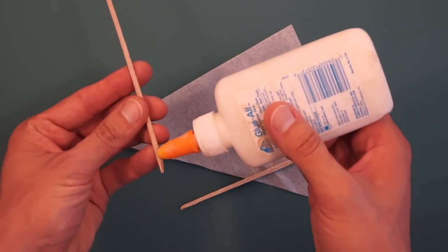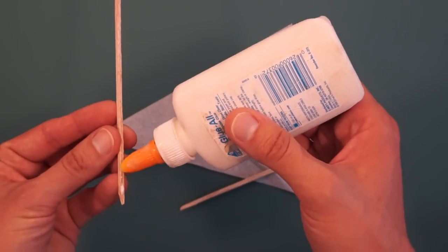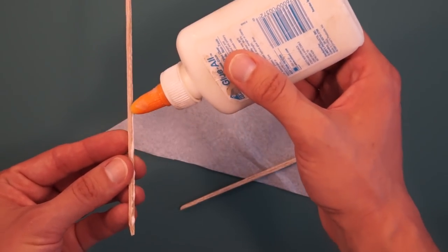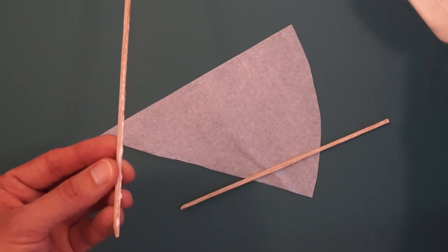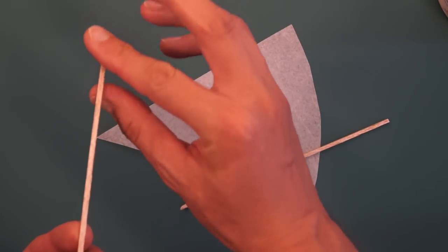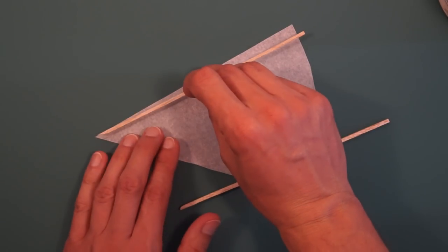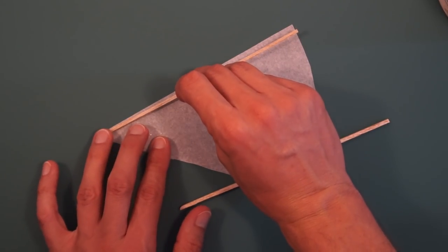We're going to put some glue on these. Just a very thin layer of glue down one side. Set it in place on the tissue with the beveled end at the tip.